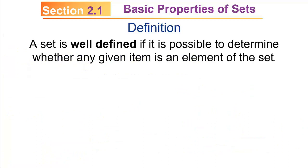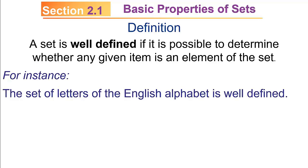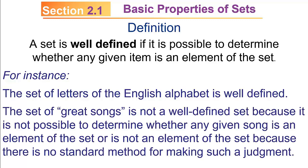There's also a term called well-defined when talking about sets. A set is well-defined if it's possible to determine whether any given item is an element of the set. For example, the set of letters of the English alphabet is well-defined — you can tell whether anything is in that set or not. But the set of great songs is not well-defined, because what you think is great might not be what I think is great, and you might change your opinion over time. If there's any ambiguity, the set is not well-defined.